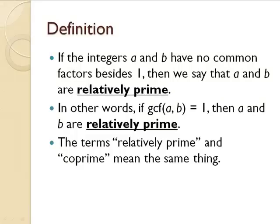If the integers a and b have no common factors besides 1, we'll say that a and b are relatively prime. They have to have 1 in common because it's a factor of every number.